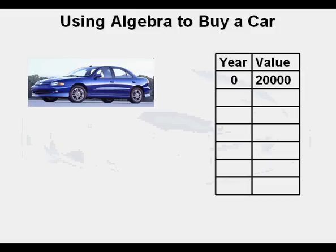Let's take a high depreciation car, this Cavalier. Let's say, to keep the math simple, we start with a value of $20,000, so we have a value of $20,000 at year zero. So we put the point in our table, zero under the year column and 20,000 under the value column.